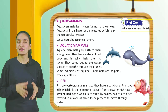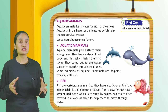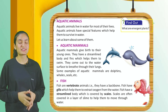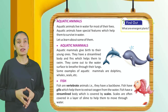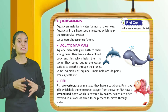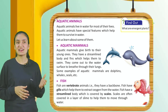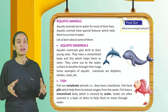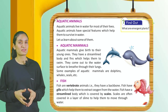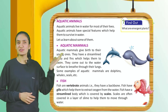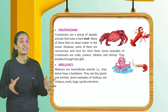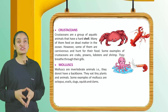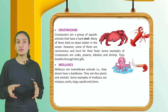Fish: Fish are vertebrate animals — that is, they have a backbone. Fish have gills which help them to extract oxygen from the water. Fish have a streamlined body covered by scales. Scales are often covered in a layer of slime to help them move through water.